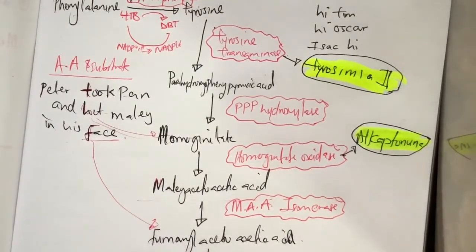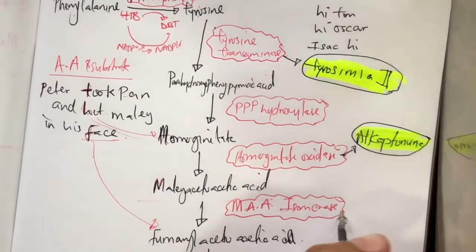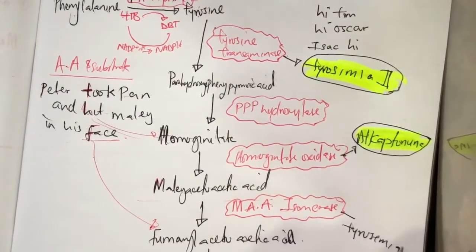And deficiency in fumarylacetoacetate isomerase leads to tyrosinemia type 1.